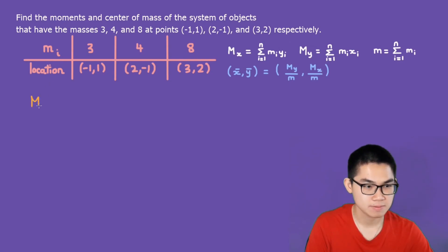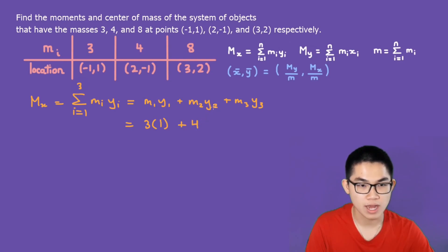So what is mx? Mx is the sum from i equals 1 to n of m_i y_i. Now there are three objects in total, so n is going to be 3. This is simply m1 y1 plus m2 y2 plus m3 y3. So what is m1? Well, m1 is the first mass, that's going to be 3. y1, this is the x and the y-coordinate, so the y1 is this one. So 3 times 1 plus m2 is 4 times y2 is going to be negative 1 plus m3 is 8 times 2. This is equal to 3 minus 4 plus 16, and that's going to give you 15.